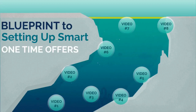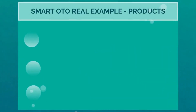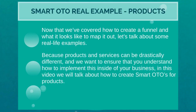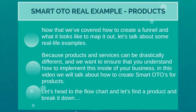Hello and welcome to video number six — this is the smart OTO real example in relation to products. Now that we've covered how to create a funnel and what it looks like to map it out, let's talk about some real-life examples. Products and services can be drastically different, so we want to ensure you understand how to implement this inside your own business. In this particular video we're going to talk about how to create smart one-time offers for products.